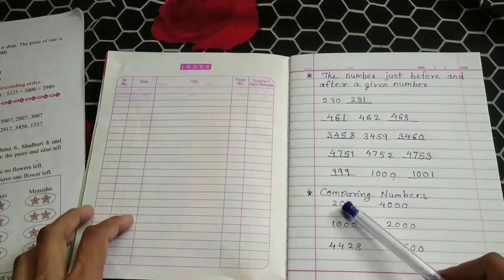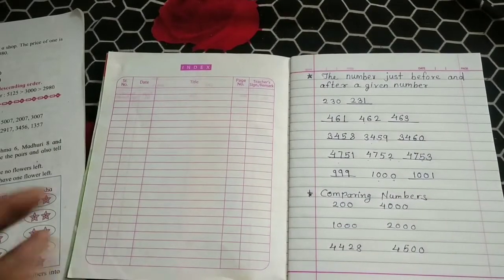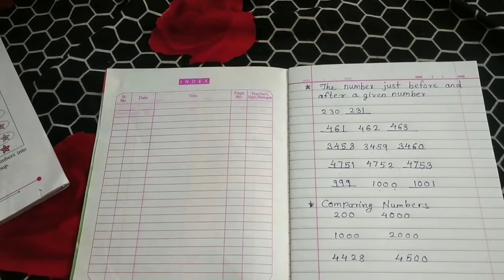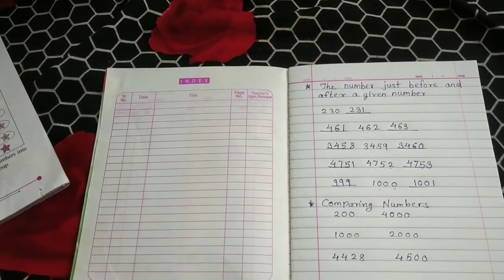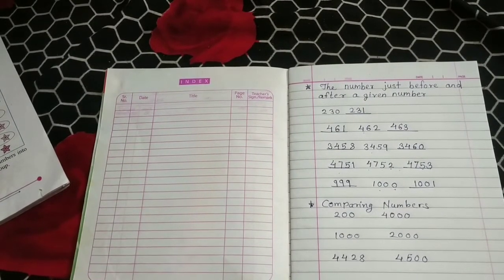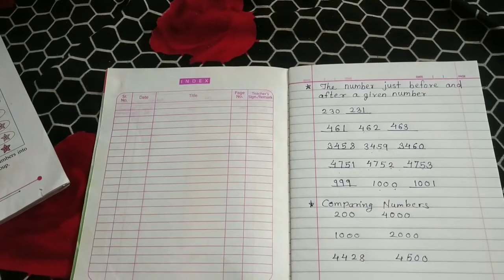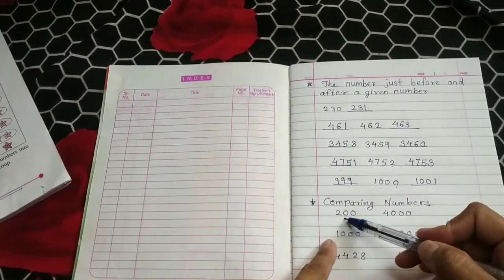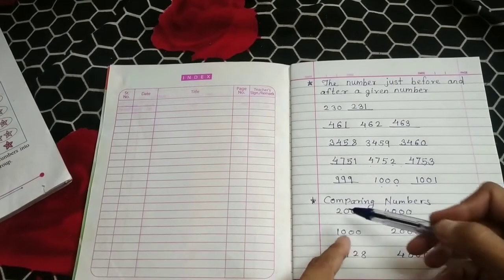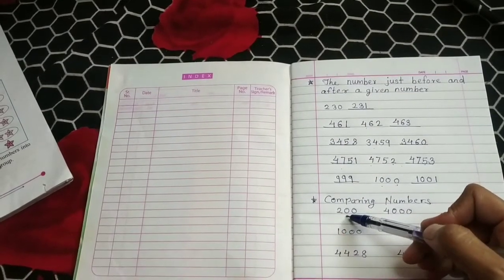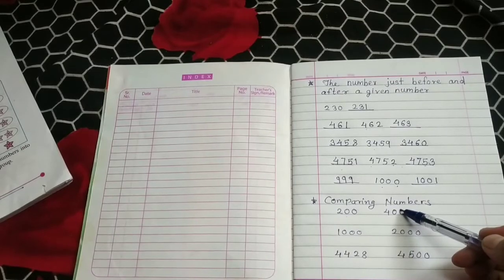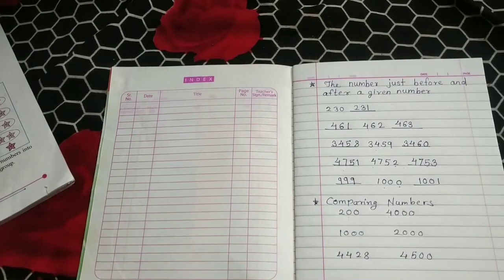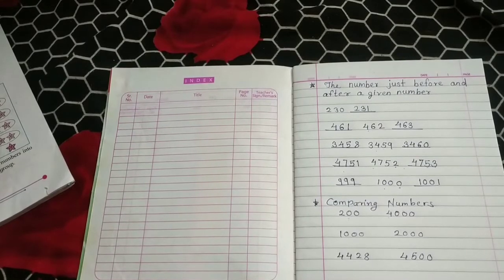The next topic is comparing numbers. Comparing numbers means we have to find out which number is smaller and which number is bigger. Here is 200 and here is 4000 — this number is a 3-digit number and this number is a 4-digit number. Any 4-digit number is bigger than any 3-digit number.